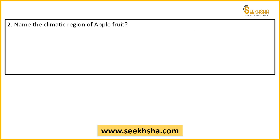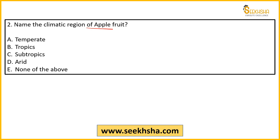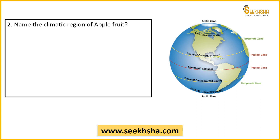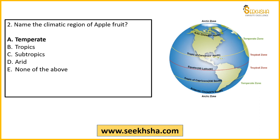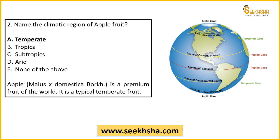Next question: Name the climatic region where apple fruit is mainly cultivated. Options are temperate, tropical, sub-tropical, arid, or none of the above. Apple mainly grows in temperate regions — let's understand the different climatic regions.